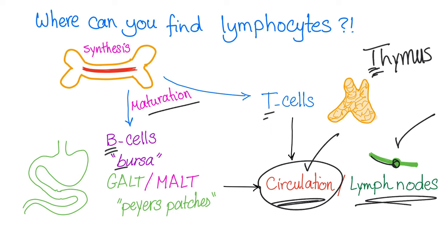Leukemia, lymphoma. Here comes a question: where can we find lymphoma? We know that leukemia is found in the bone marrow as well as the bloodstream. But what about lymphoma? The thymus can get lymphoma — it's rare, but it can happen. Your MALT tissue can get lymphoma called MALT lymphoma or maltoma. Your lymph nodes, of course, can get lymphoma. So: leukemia in your bone marrow and bloodstream; lymphoma in the lymph nodes, thymus, and mucosa-associated lymphoid tissue.